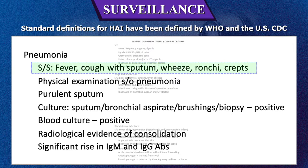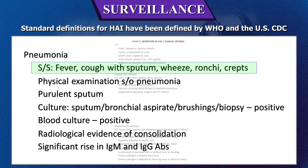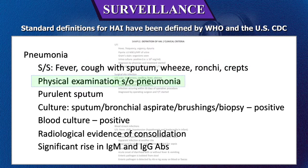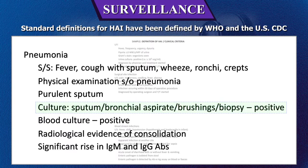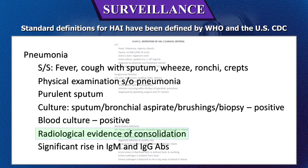For pneumonia, the definition includes: signs and symptoms of fever, cough with sputum, wheeze, ronchi, crepitations on physical examination suggestive of pneumonia; purulent sputum culture positive in sputum, bronchial aspirate, brushings, or biopsy; and blood culture positive, radiological evidence of consolidation, or significant rise in IgM and IgG antibodies.